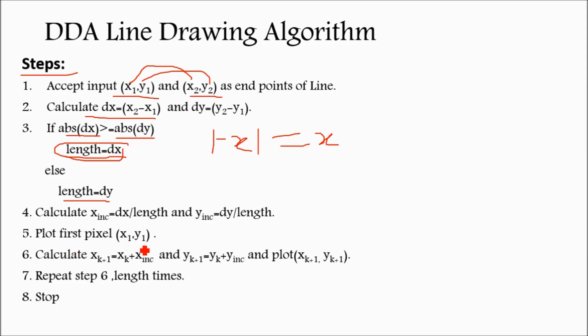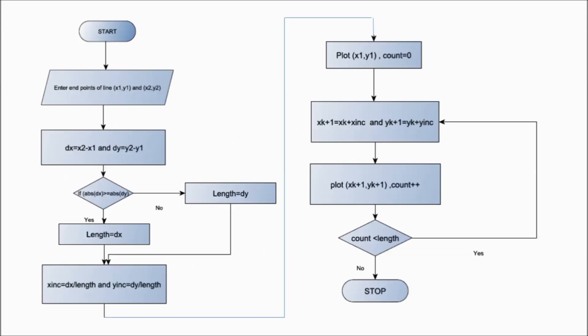Now plot first point x1, y1. Then calculate x of k plus 1. This is the recursive calculation. x of k plus 1 is the present value plus x increment. You have to recursively calculate x of k plus 1 equals x of k plus x increment, and y of k plus 1 equals y of k plus y increment. And you have to repeat this step 6 length times, means whatever dx or dy times, that times you have to repeat.